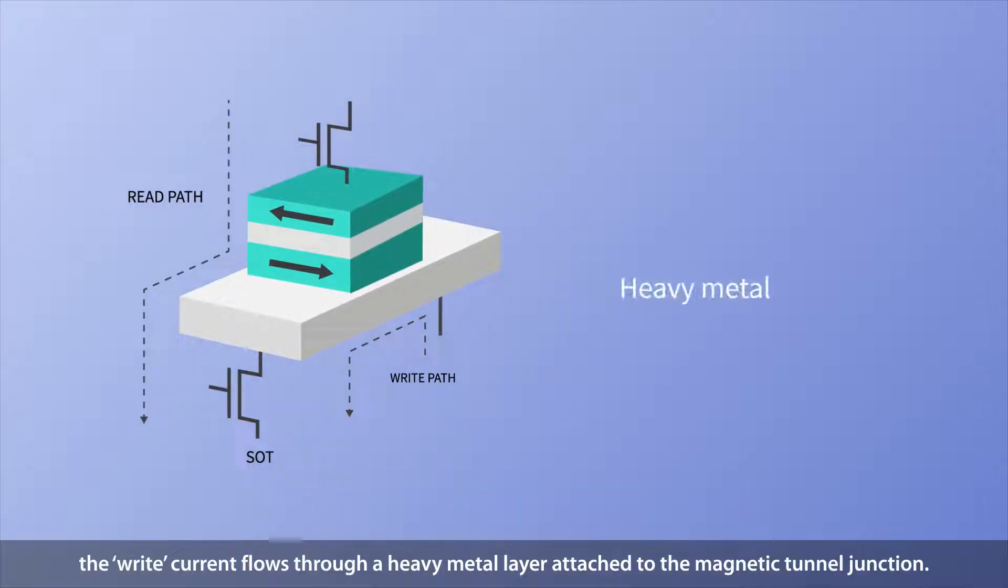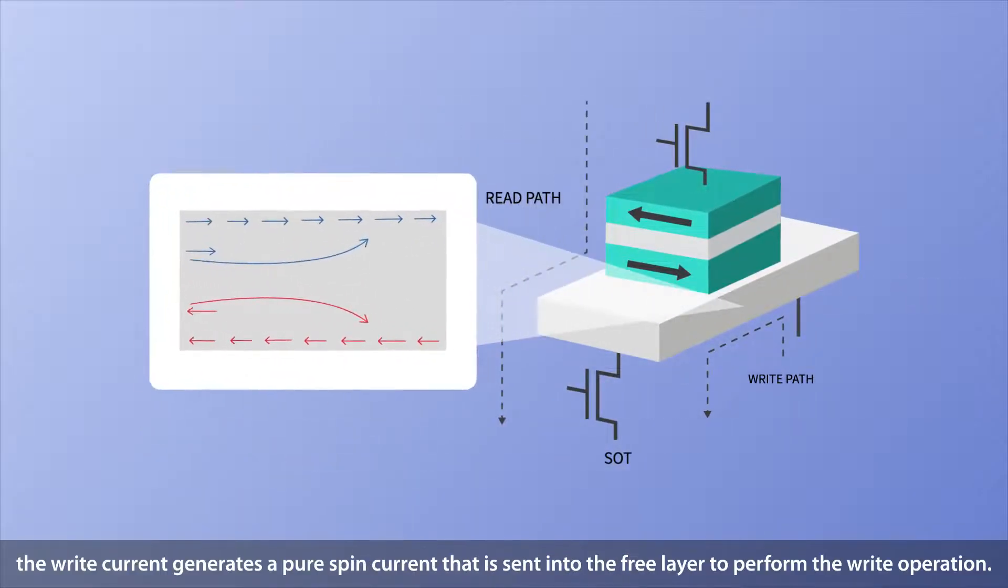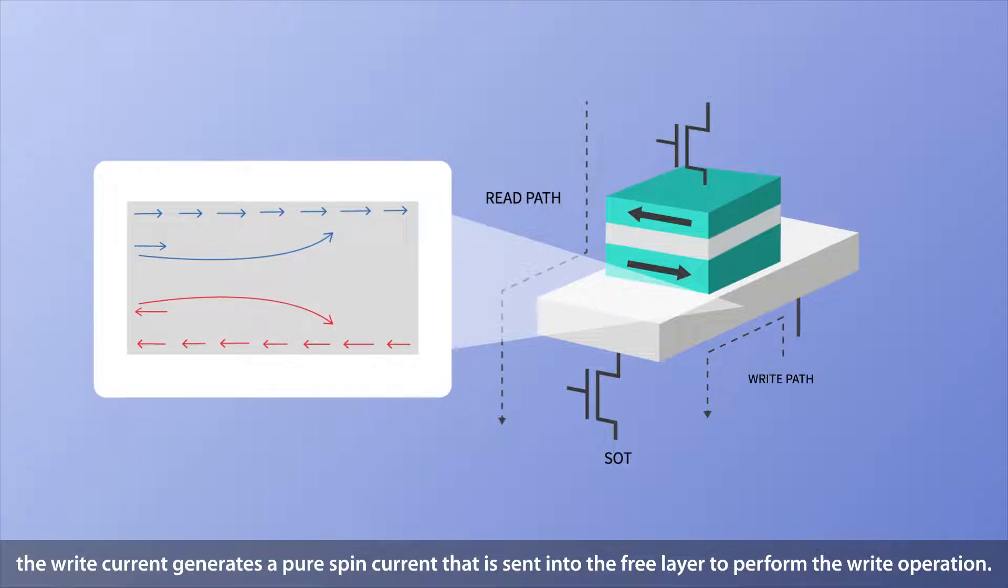the write current flows through a heavy metal layer attached to the magnetic tunnel junction. Thanks to the spin-Hall effect, the write current generates a pure spin current that is sent to the free layer to perform the write operation.